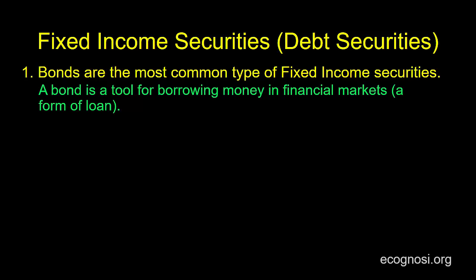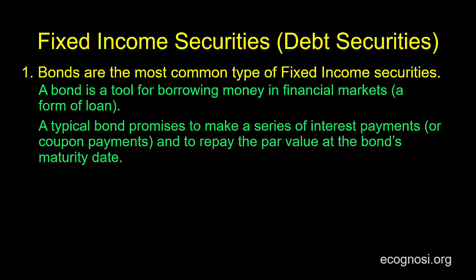Let's now describe how a traditional bond is structured. A typical bond promises to make a series of interest payments, also known as coupon payments, and to repay the par value of the bond at the bond's maturity date. The par value can be any amount the entity issuing the bond wishes. Like the bond's coupon payments, there is alternative terminology for the par value as well, which we will introduce over time.